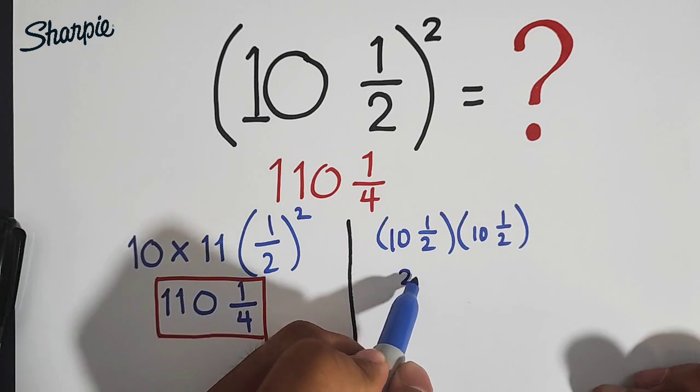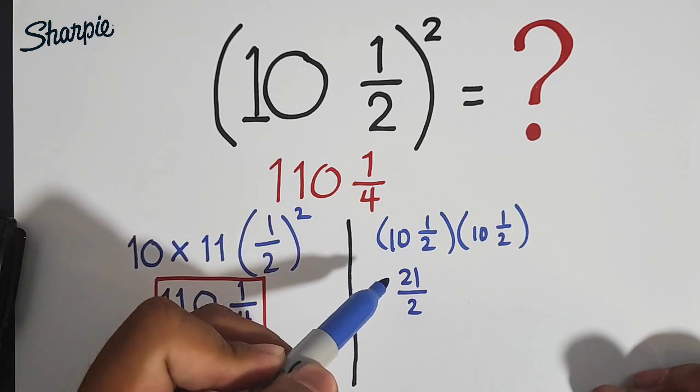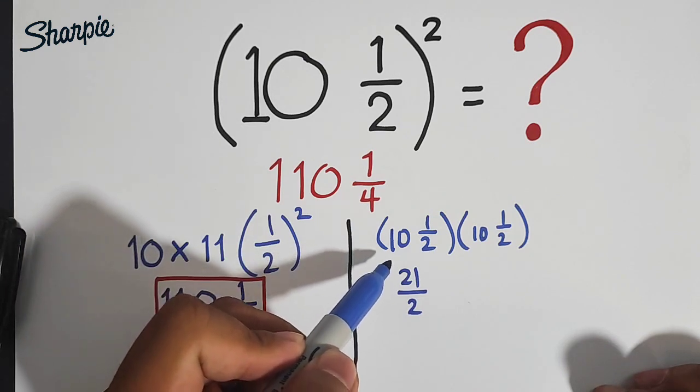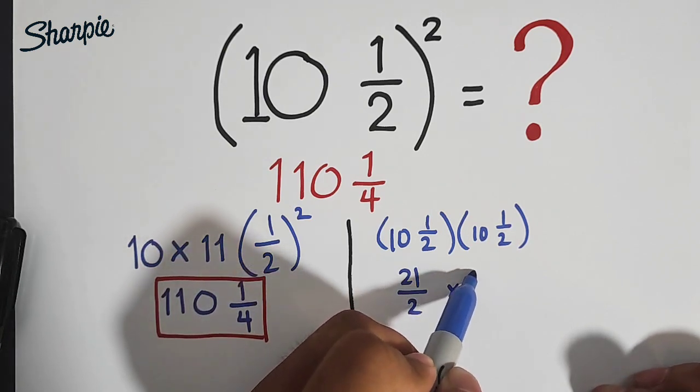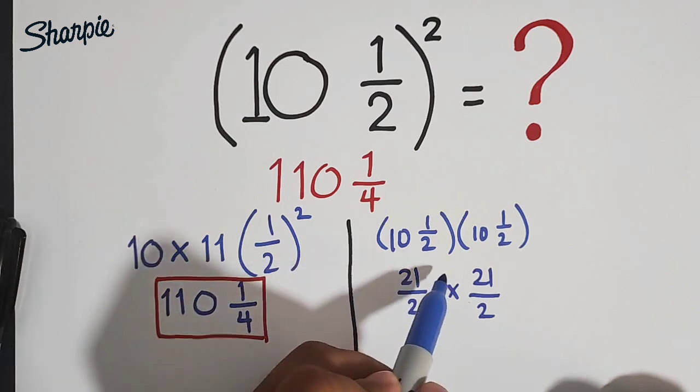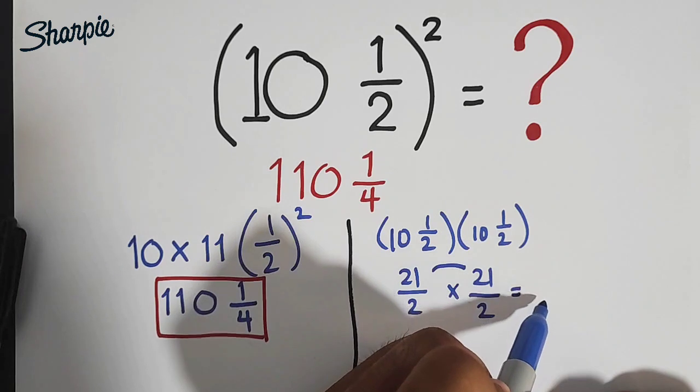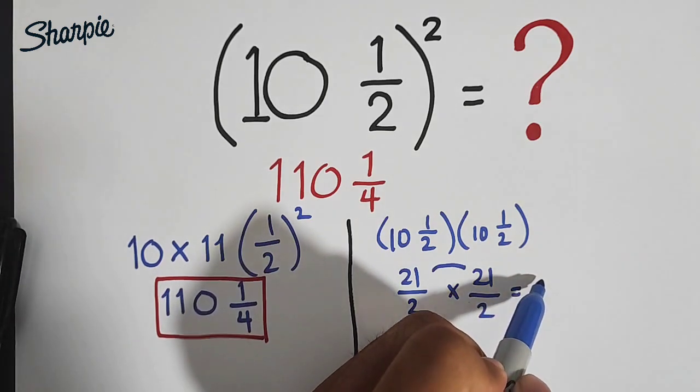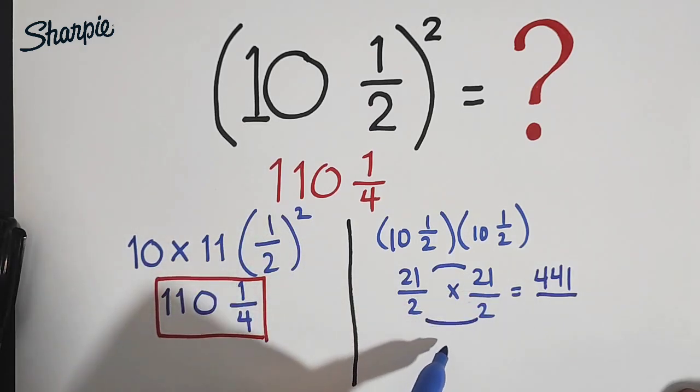Ibig sabihin ito guys, that the improper fraction equivalent to 10 and 1 half is 21 over 2 times 21 over 2. So ngayon, let's multiply, 21 times 21, this is equal to 400, okay? 21 times 21 is equal to 441 over 2 times 2, which is equal to 4.